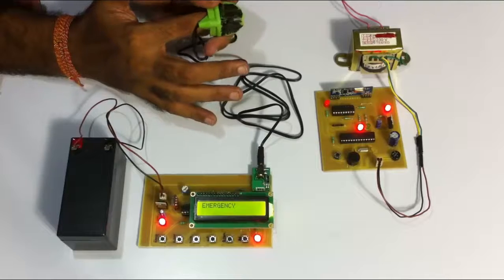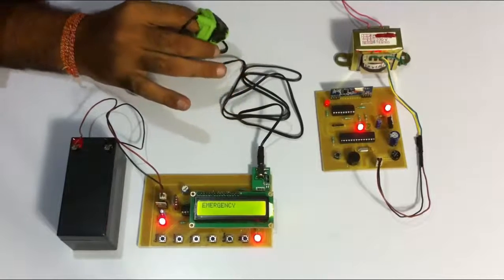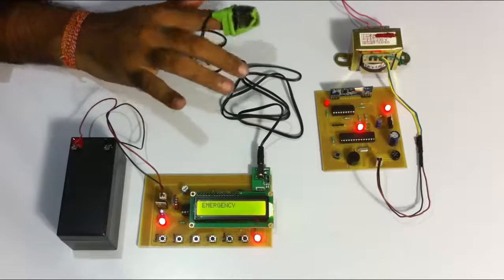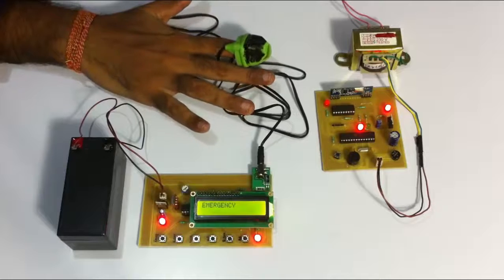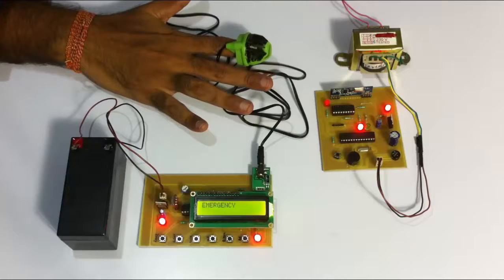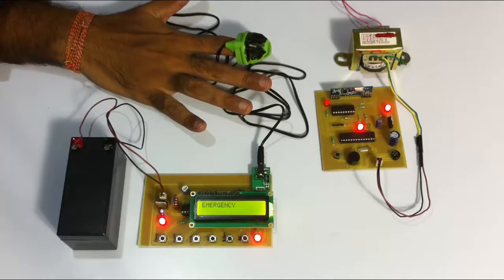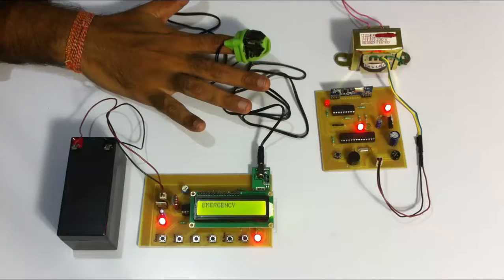As you can see, when the heart rate went too low, it waited for some time and then it sent a distress signal. It waited for some time to check whether it is not a faulty value and once it confirms that, it will send a distress signal.